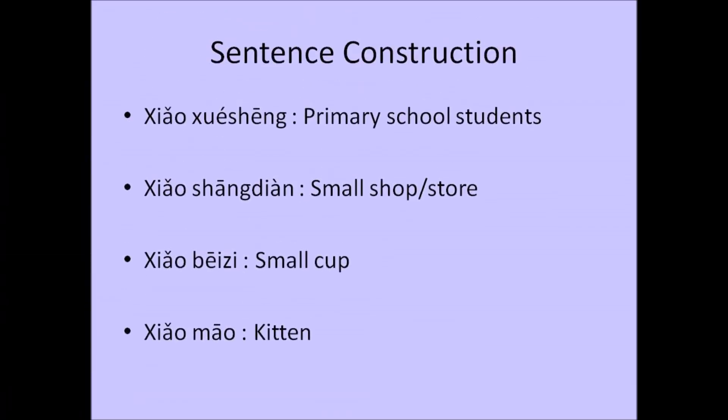Slowly, we will start to construct sentences based on the vocabulary we learned just now. 小学生, which means primary school students, or junior students. 小学生. 小商店, which means small shop, or small store. 小商店. 小杯子, which means small cup. 小杯子. 小猫, which means kitten. 小猫.